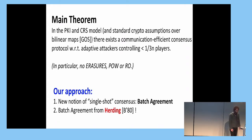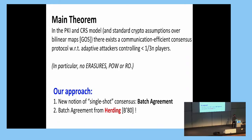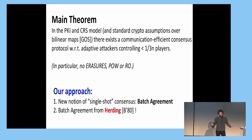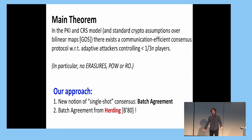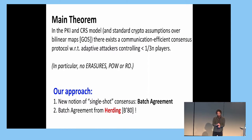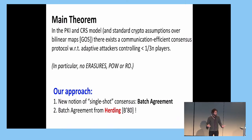In the rest of the talk, let me convey at a high level what our approach is. The idea relies on this notion called herding. As a first step, we define a new type of single-shot consensus primitive that is different from Byzantine agreement, which we call batch agreement. It has slightly stronger properties, and then we show how to implement this new type of batch agreement from herding.